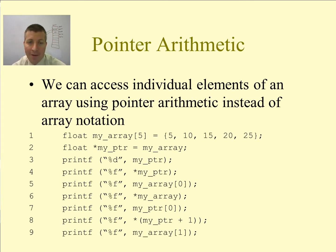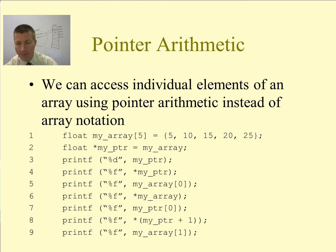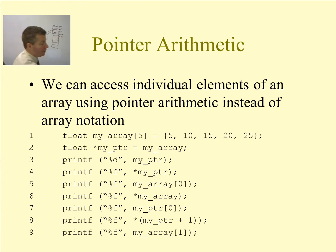Now take a look at this code showing pointer arithmetic. When we add numbers to a pointer, it automatically adds the correct number of bytes based on the type. On line 1, I create a float array called myArray with 5 elements: 5, 10, 15, 20, 25. Let me draw out in main memory exactly what this looks like.